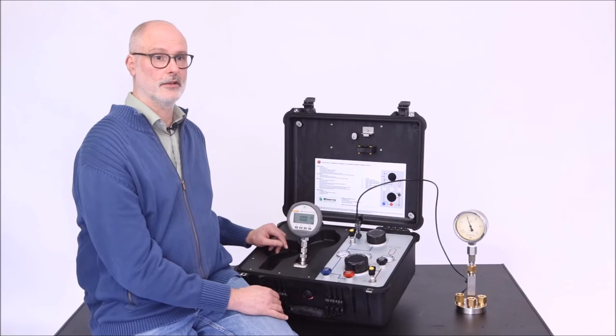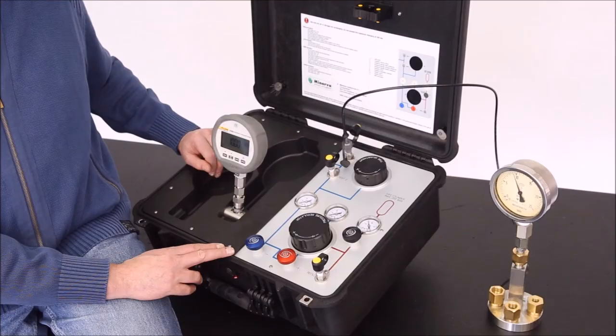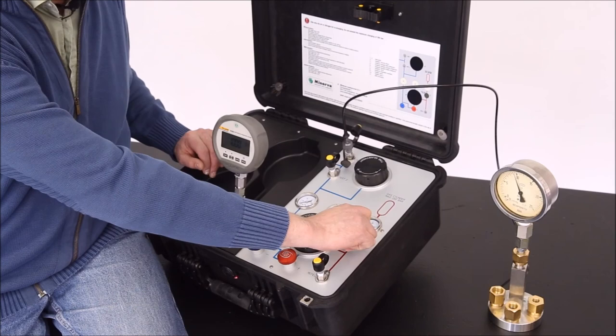At the end of the calibration, we want to make sure we leave the Minerva Portable High Pressure Case in a safe state. This means I'm going to close my bottles, isolate my bottles from the rest of the system, and I need to vent the system.